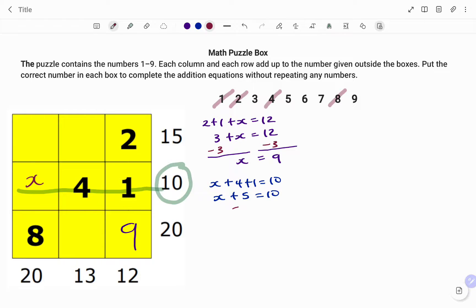Using the balance method, if I take out 5 from both sides, what I have left is x plus 0, which is x, equals 10 minus 5, which is 5. So my missing value for the box is 5.